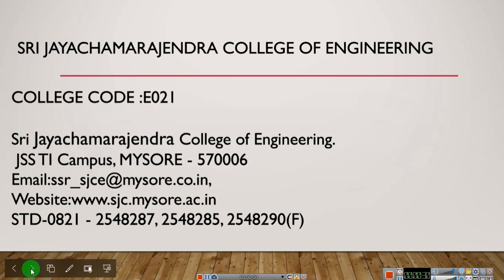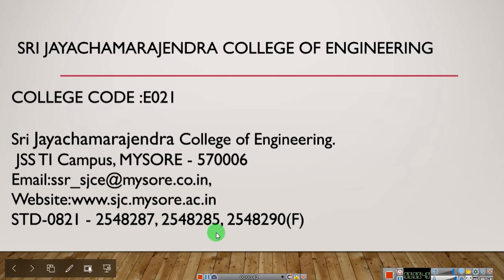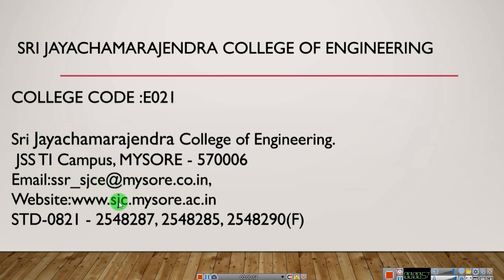Now let us see the first college. The first college is JC Chamraja College of Engineering, that is JC College. The college code is E021. You can see the college name and the address. This is the email address of the college, this is the website address, and these are the telephone numbers, and this one is the fax number.